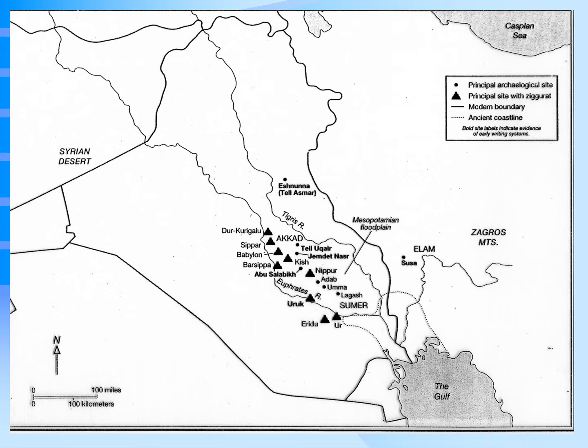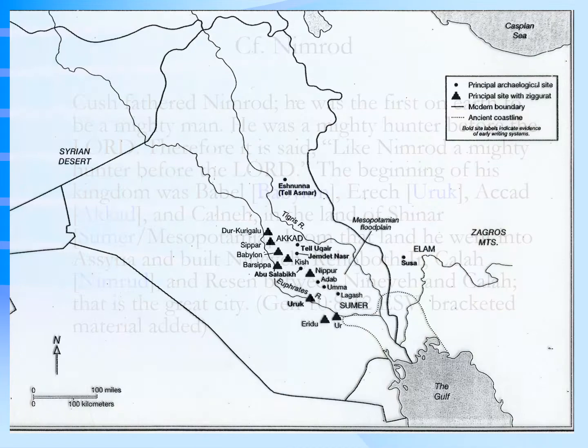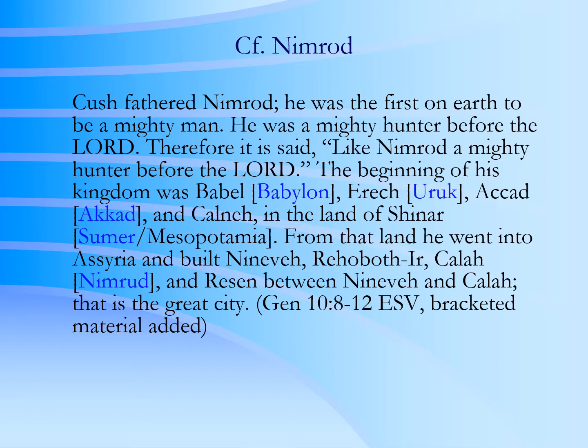This map focuses in on ancient Mesopotamia — ancient Sumer, in fact — which is the first area we will cover, and it is the beginning of civilization as we know it anywhere on Earth. Important to note are the cities of Ur, spelled U-R, and Babylon, which comes into prominence later. Uruk, U-R-U-K, is also quite important. After looking at that map, one can note the passage from Genesis which mentions Nimrod and all the cities he was involved with.